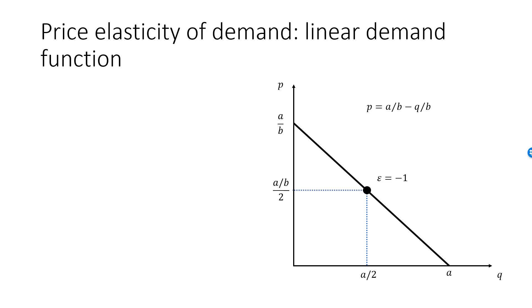To see this, remember that epsilon is dQ/dP times P over Q. dQ/dP is equal to minus B. At the middle of the demand curve, P is A over B divided by 2, and Q is A over 2. A over B divided by 2 is the same thing as A divided by 2B.